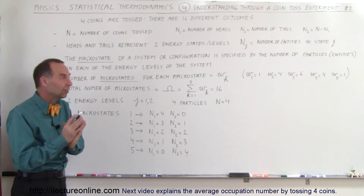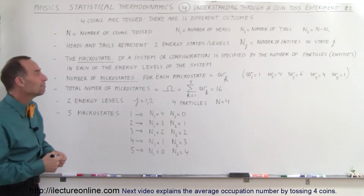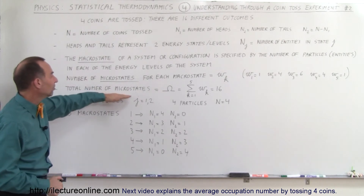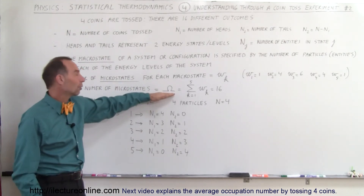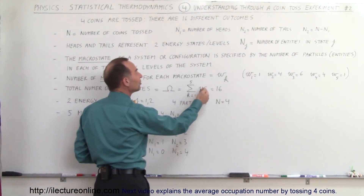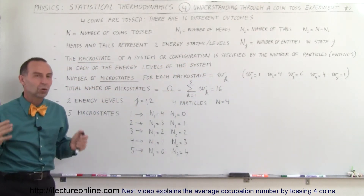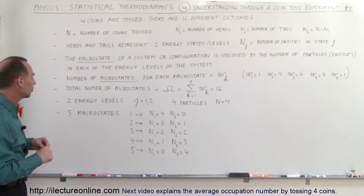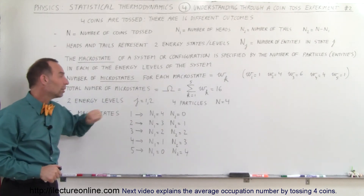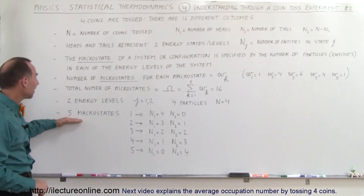There were five macro states and a total of 16 outcomes, which represent the 16 microstates belonging to those five macro states. The total number of microstates, defined by capital omega, is simply the sum of the microstates for each macro state — adding all those numbers gives a total of 16. Two energy levels defined by j equals 1 and 2, and four particles defined by N equals 4.